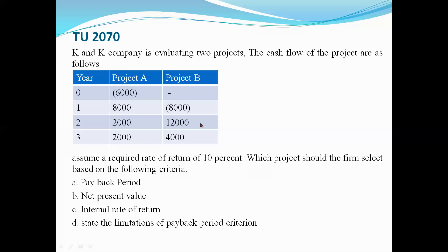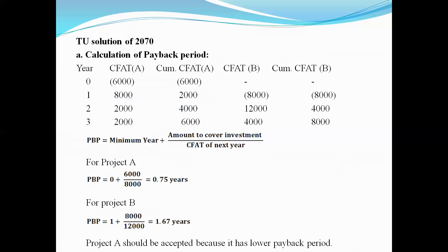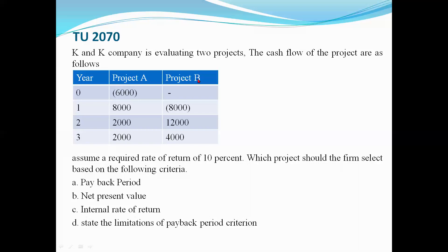We have two projects: Project A and Project B, and we have to compare them. The payback period is less than the project. A large project by NPV and IRR may be reduced and more. Let's see. As a result, in the payback period of cash flow A and cash flow B, we will look at the cumulative cash flows.